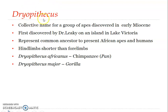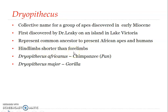Dryopithecus is considered a common ancestor to both the family Pongidae and Hominidae. There are several species: Dryopithecus africanus is believed to be the ancestor of chimpanzee, and Dryopithecus major is believed to have given rise to the gorilla. Dryopithecus had forelimbs shorter than hind limbs, and it is believed to be the distant ancestor of man.